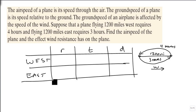The pieces that we know for sure: we know that for our west, it takes 4 hours, and for our east, it takes 3 hours. We know that in both cases the distance is 1,200 miles. So we can fill in the 1,200 for both of these.